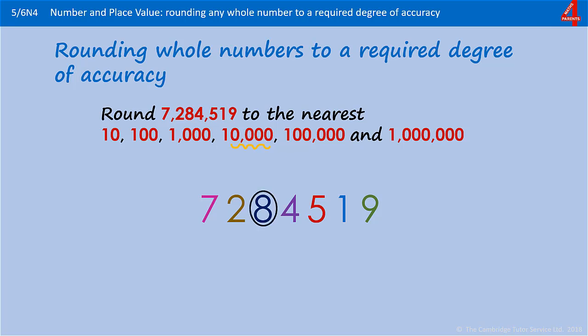Locate the ten thousand, which here is eight, eighty thousand. That four thousand is telling us whether we need to round up or round down. Because it's four or less, we're rounding down. So that 80,000 will stay the same when the thousand, hundred, ten, and one become zero. Seven million, two hundred and eighty thousand.